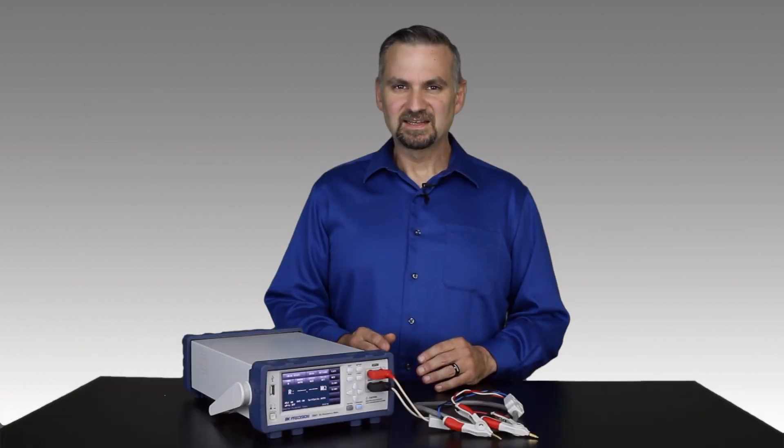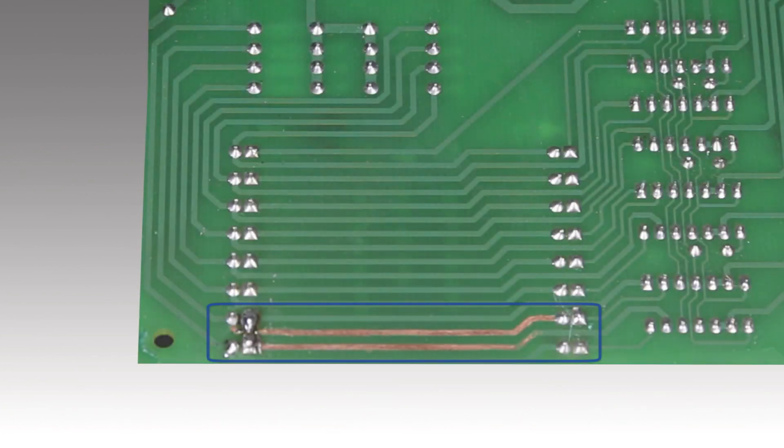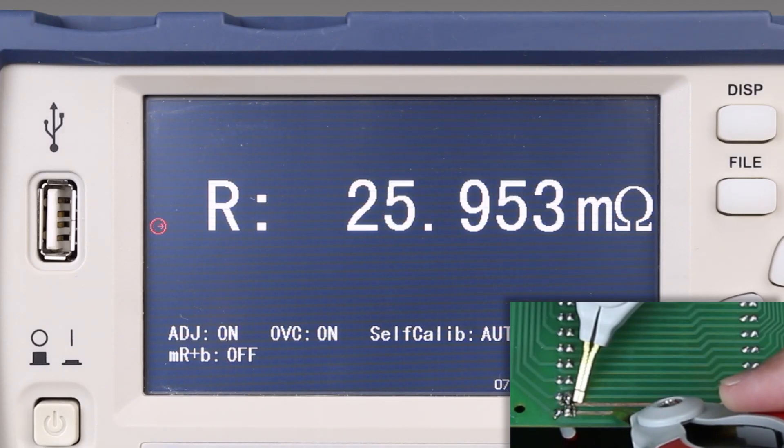After reviewing the schematic and locating a starting point, the circuit board was prepared by removing the solder mask. I can start anywhere along the trace.